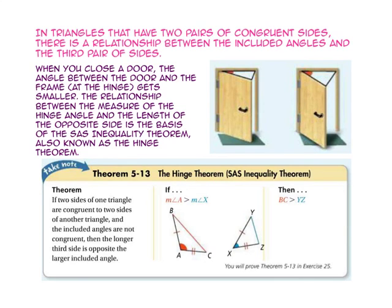The hinge theorem states: if two sides of one triangle are congruent to two sides of another triangle and the included angles are not congruent, then the longer side is opposite the larger included angle. So if you look at this diagram, since side BA is congruent to side YX, and side AC is congruent to side XZ, but the measure of angle A is larger than the measure of angle X, then side BC is longer than side YZ.